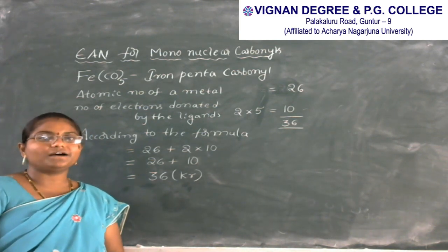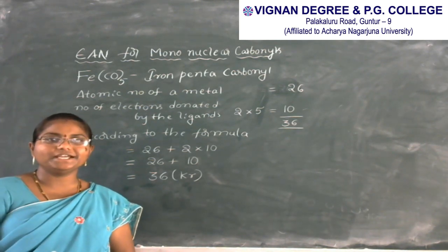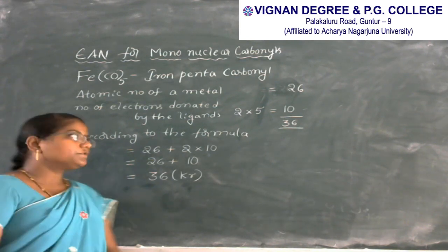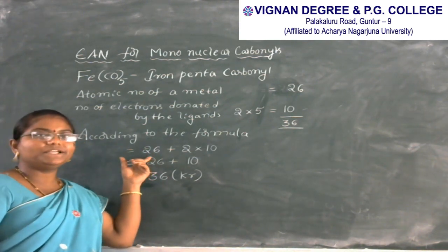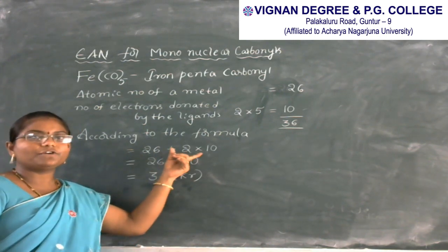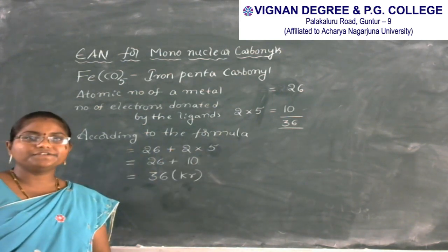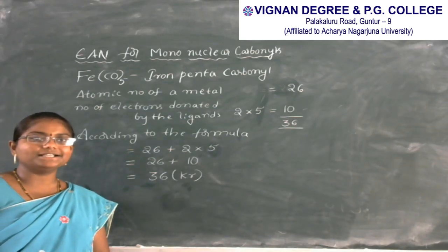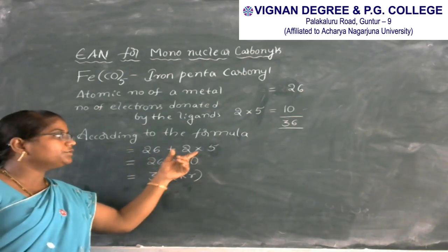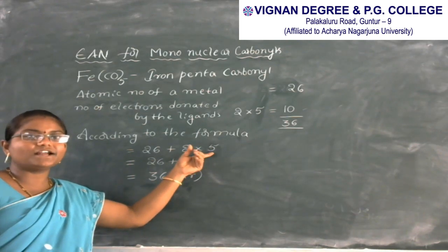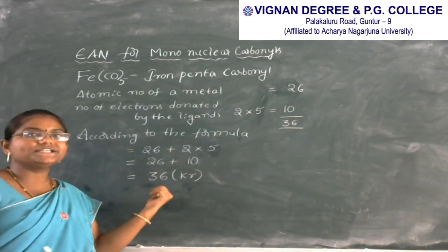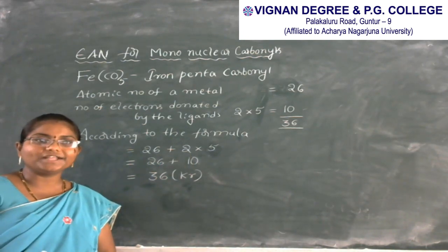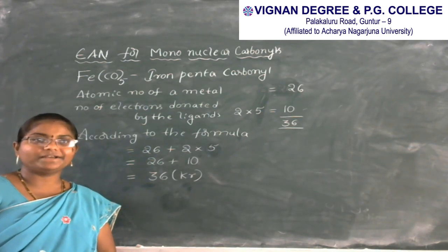According to the formula for EAN: atomic number of metal plus 2 into number of ligands. So EAN is calculated as 26 plus 2 into 5 ligands, which gives 26 plus 10 equals 36. Here 36 is the total EAN for iron pentacarbonyl.